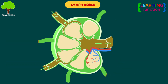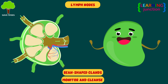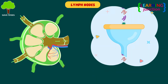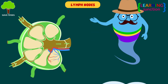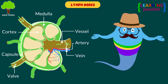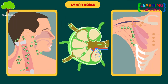Lymph nodes are bean-shaped glands that monitor and cleanse the lymph as it filters through them. The nodes filter out the damaged cells and cancer cells. A few of the familiar locations of lymph nodes are in your armpit and neck.